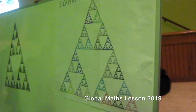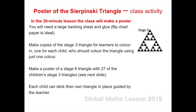Building your poster. Use a ruler to draw a very light pencil line 3cm above and parallel to the base of a large sheet of paper — flip chart paper works well. You will need a large backing sheet and glue. Make copies of the stage 3 triangle for learners to colour in, one for each child, who should colour the triangle using just one colour. Make a poster of a stage 6 triangle with 27 of the children's stage 3 triangles.